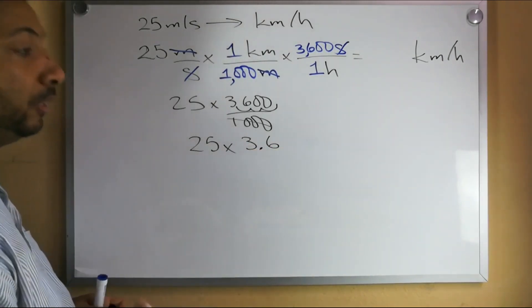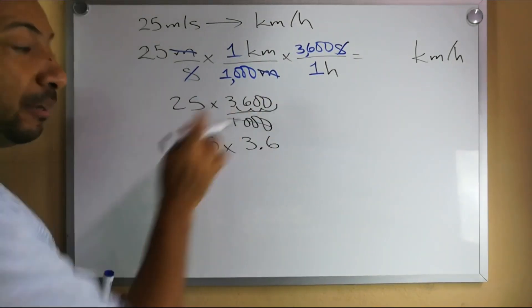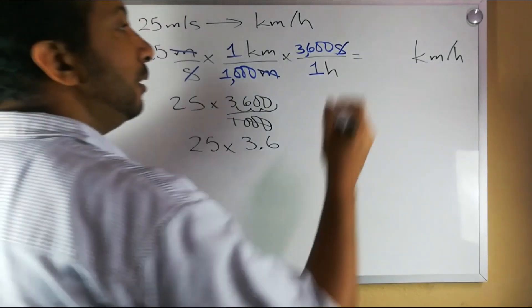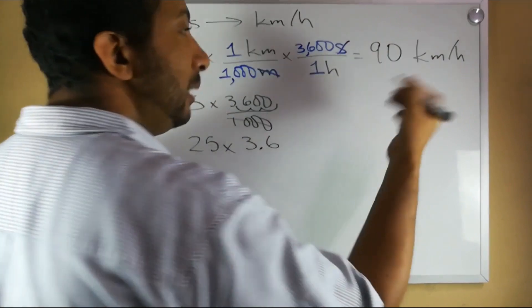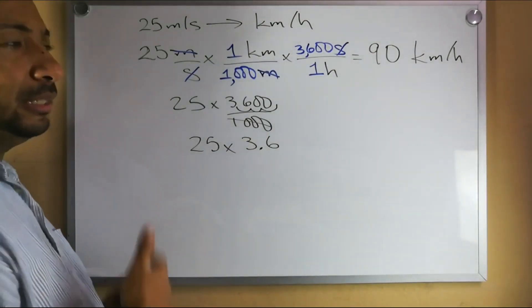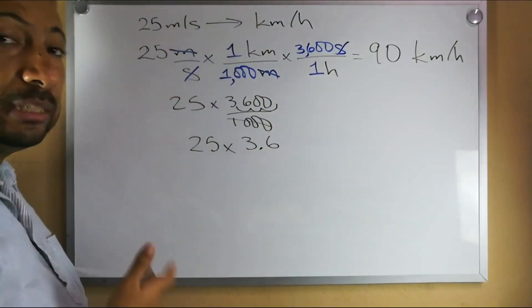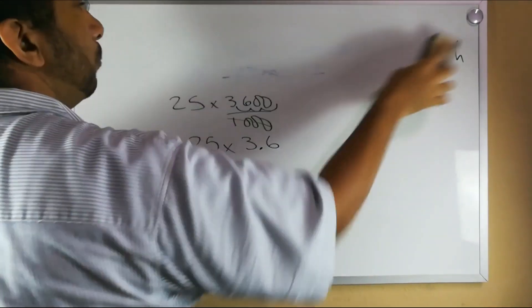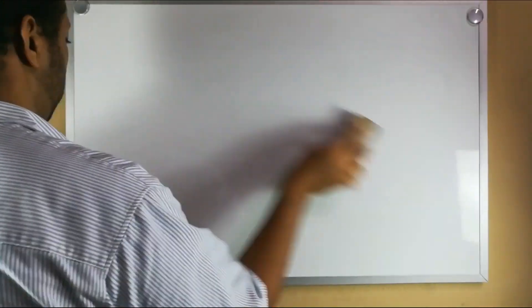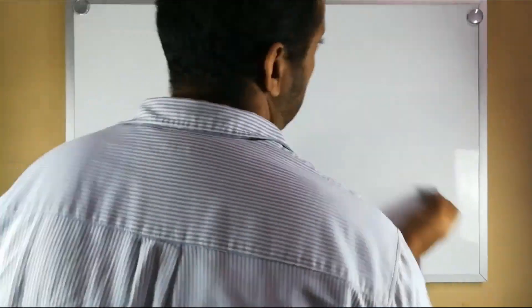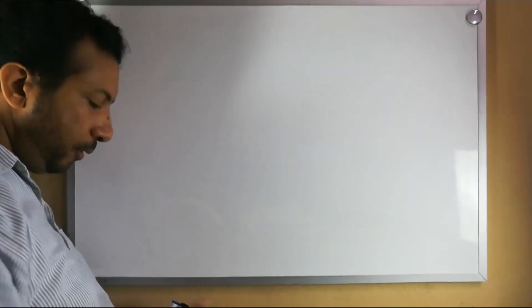See that's where this multiply times 3.6 rule came from that I told you girls about. It's 3600 divided by a thousand which is 3.6. So 25 times 3.6 gives us 90. So that is 90 kilometers per hour and it's easy to see that whenever you do it in the opposite way then you would divide by 3.6 instead. So let's say you wanted to do some other kind of conversion.